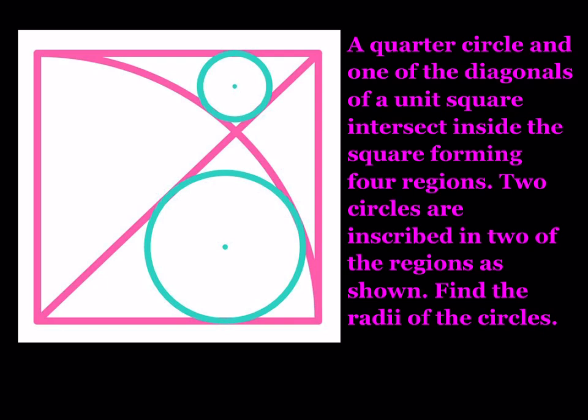A quarter circle and one of the diagonals of a unit square intersect inside the square forming four regions. Two circles are inscribed in two of the regions as shown. Find the radii of the circles.